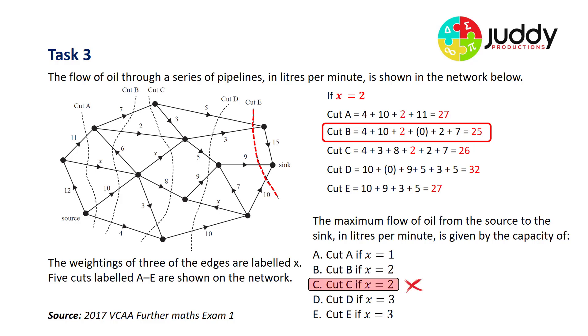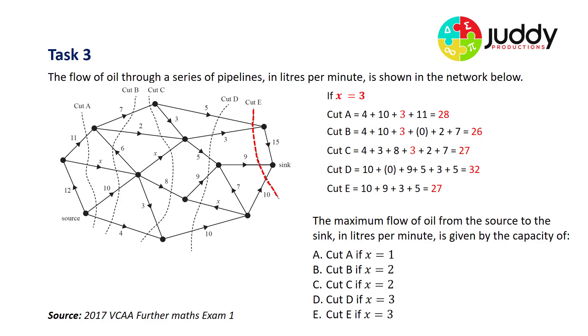Let's quickly look at the remainders. Option C says cut C will give a maximum flow when X equals 2. That's clearly not true. Cut C doesn't give the minimum flow because it's 26, whereas cut B is only 25. Finally, let's check out the option when X equals 3. We can check out all our values and cut B still has the lowest capacity of 26, even when X equals 3. So option D, cut D gives the maximum flow when X equals 3, is incorrect. Cut D has a capacity of 32, whereas cut B is 26. And option E, cut E provides maximum flow when X equals 3. Cut E has a capacity of 27 when X equals 3, and cut B is lower with 26.